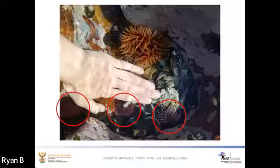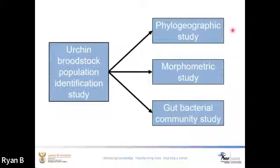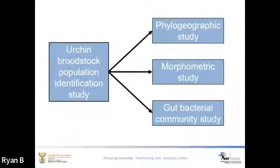The central question my study aims to answer is how we can determine the best populations from which to collect broodstock for culture, and for this I have designed a three-pronged study. Chapter 1 is the investigation of phylogenetic relationships between populations, Chapter 2 a morphometric allometric study, and Chapter 3 — which is the focus of today's presentation — is the determination of gut bacterial communities in sea urchins. Chapter 3 specifically sets out to answer whether intestinal bacterial communities can be an indicator of population health, and so inform on which population to choose for broodstock.